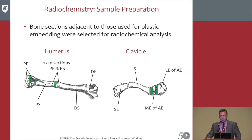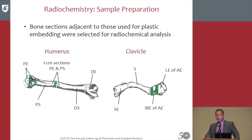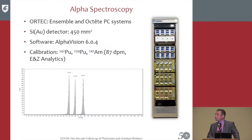Bone samples adjacent to those used for autoradiography were digested and analyzed using alpha spectroscopy. We used our standard SOPs for sample digestion and counting. Importantly, the alpha spectroscopy system was calibrated with the same source as the iKID system.